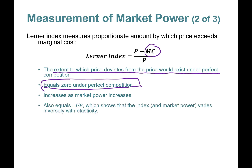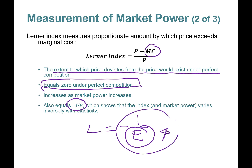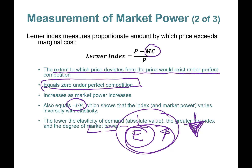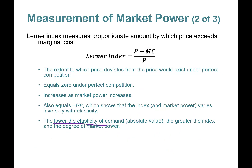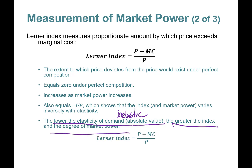Under perfect competition, price equals marginal cost so the Lerner Index equals zero — no market power. The Lerner Index also equals negative one over the elasticity of demand. If demand is more elastic (larger absolute value), the Lerner Index shrinks, meaning less market power. Lower elasticity of demand in absolute value — more inelastic demand — means a greater Lerner Index and greater market power.